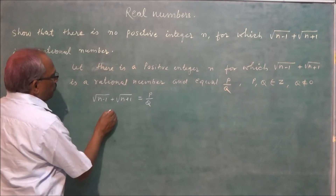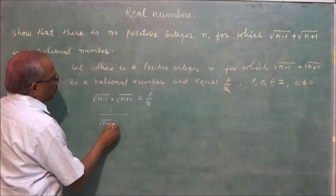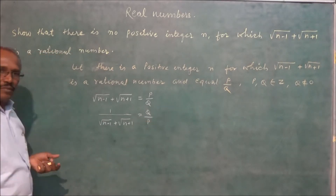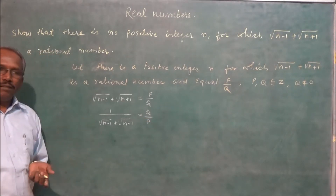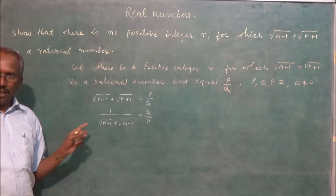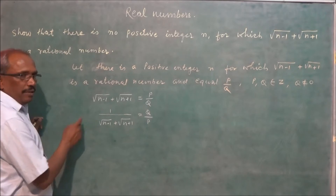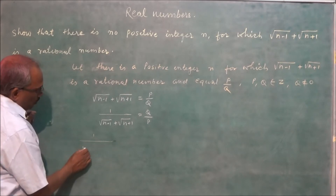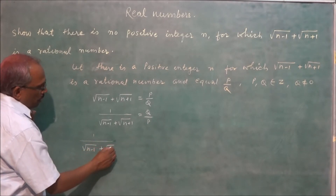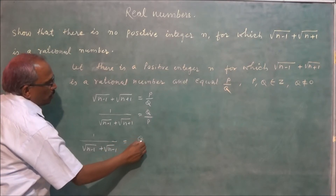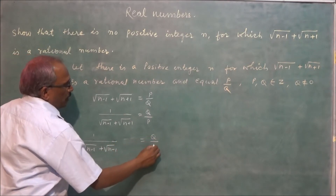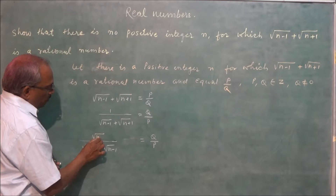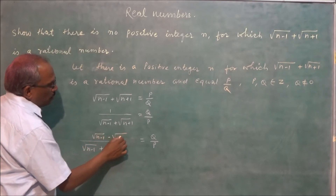So taking reciprocal: root n minus 1 minus root n plus 1 equals q upon p. We rationalize by multiplying numerator and denominator by root n minus 1 minus root n plus 1.